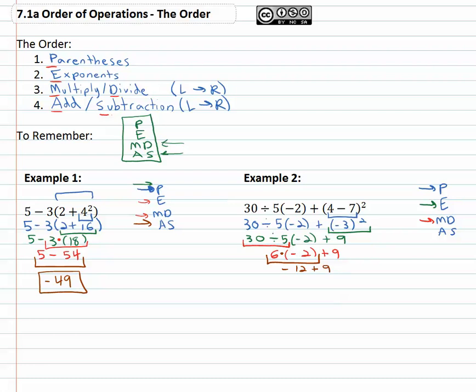And finally at the end we're ready to add and subtract, negative 12 plus 9 is negative 3 for our final solution. By taking the time to show our work, every step, rewriting everything but the one thing, and remembering the order, parentheses, exponents, multiply and divide left to right, and add and subtract left to right, we can quickly evaluate an expression.